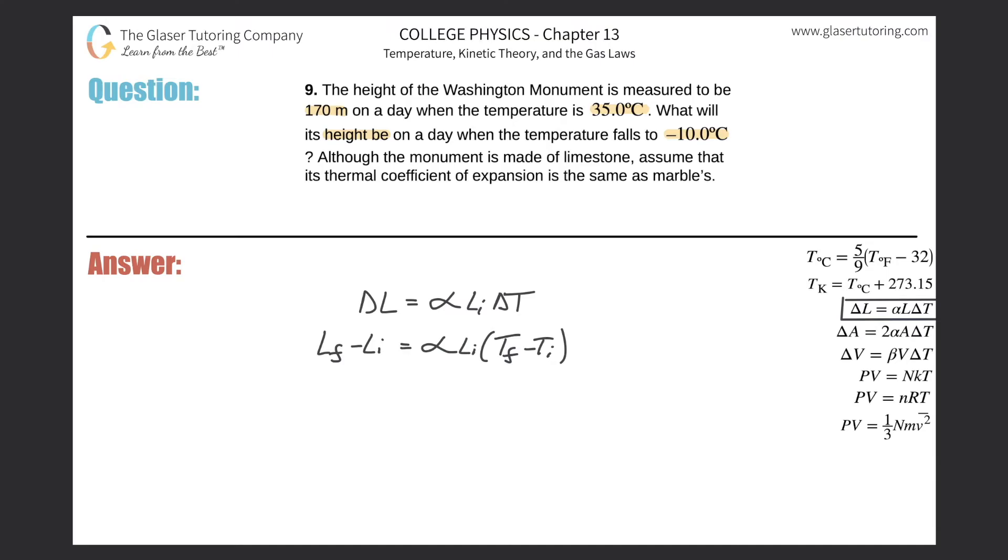So what I need to do is combine my initial lengths algebraically. I want to add this over to the right-hand side. When I do so we get an equation that looks like this: the final length will be equal to alpha Li times (Tf minus Ti) plus Li. Now you can factor these Li's out and create a simpler equation, but I'm just going to leave it.